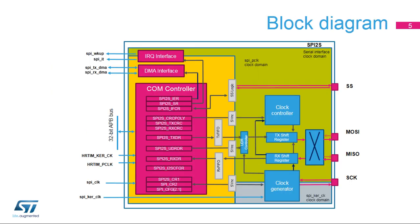The simplified SPI block diagram shows the peripheral's basic control mechanisms and functions. The separated clock domains are highlighted by areas with different colors. All the interconnection signals between the domains are synchronized. The PCLK clock domain has to be clocked when any access of the SPI registers is needed via the peripheral bus interface.